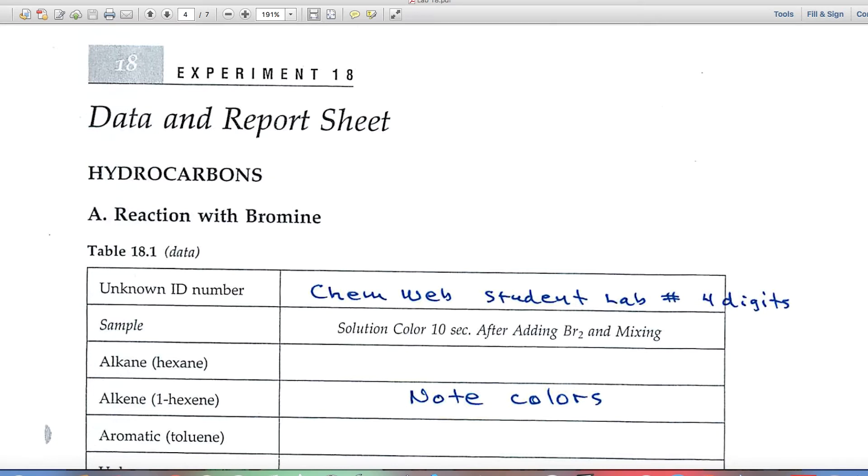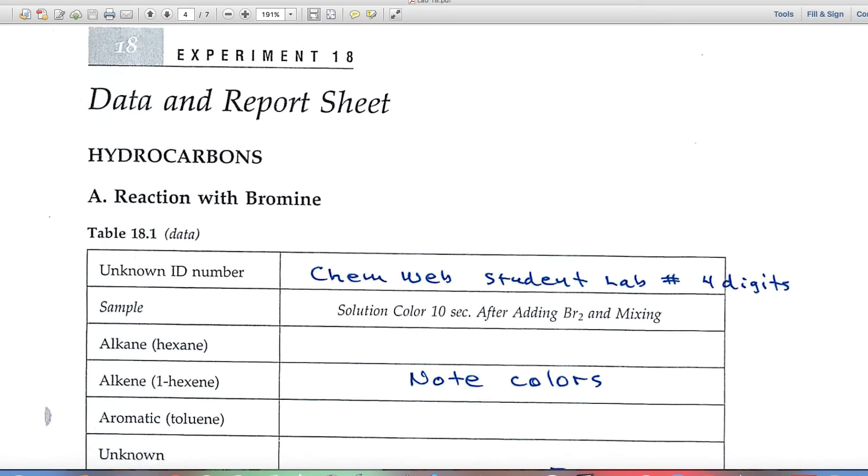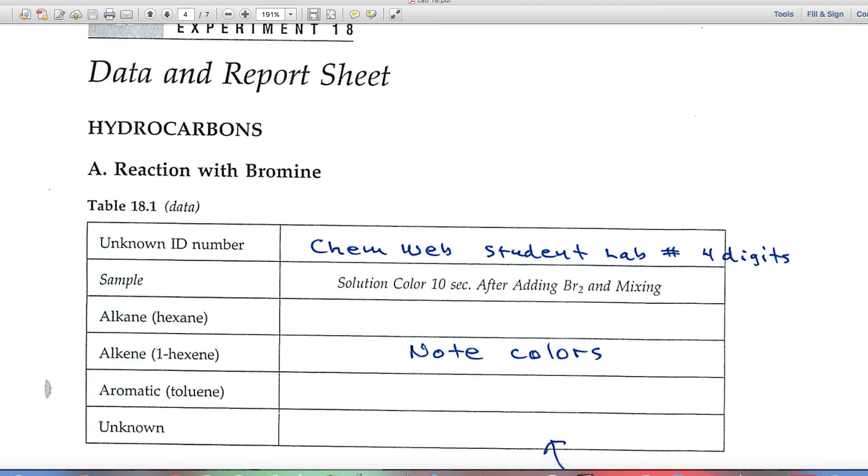Let's have a look at the data and report sheet. The first chemical reaction that you'll carry out is that with bromine. Bromine is in a solution, and it's sort of red colored, and what you'll look for are color changes.